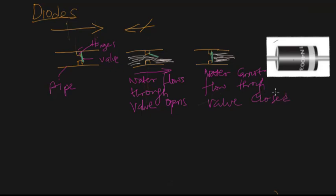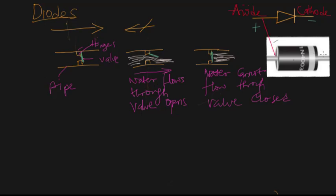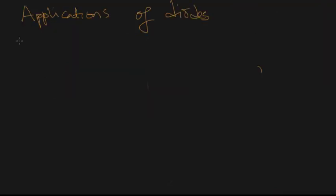Now what about the symbol of the diode? You can see the symbol of the diode — it has two terminals. We have the positive anode terminal and then we also have the negative cathode terminal. That's the symbol of the diode shown there, along with a typical physical diode showing the labeling of the anode and the cathode.